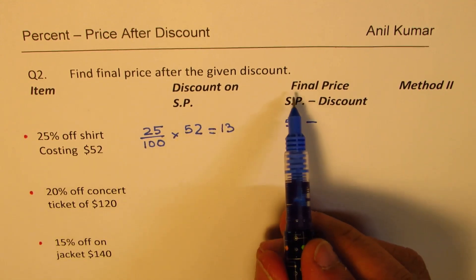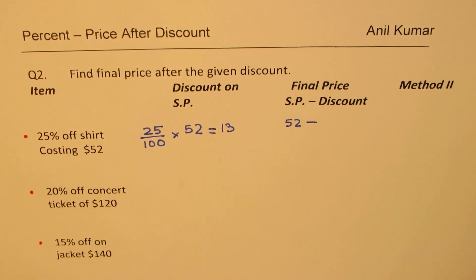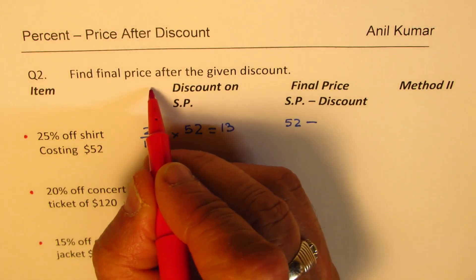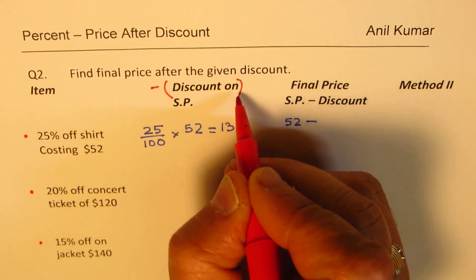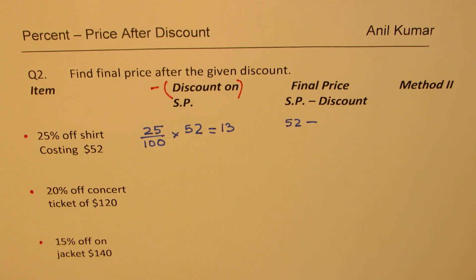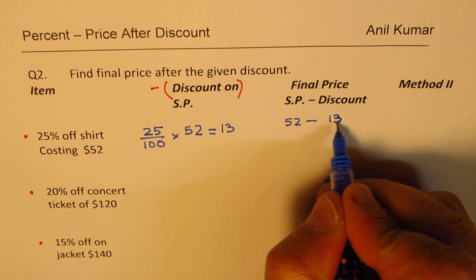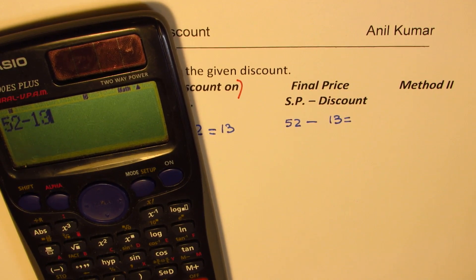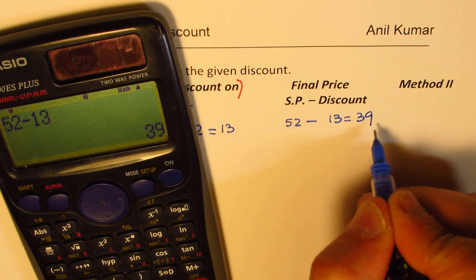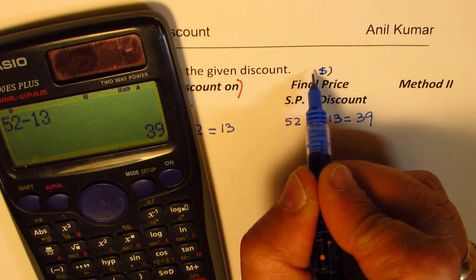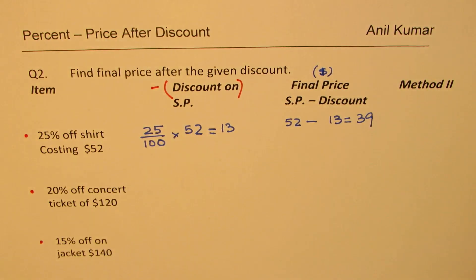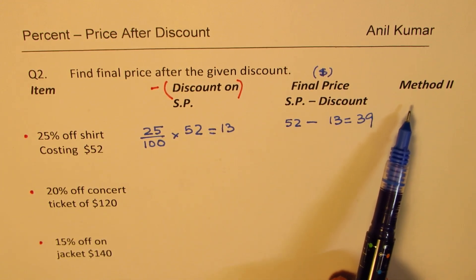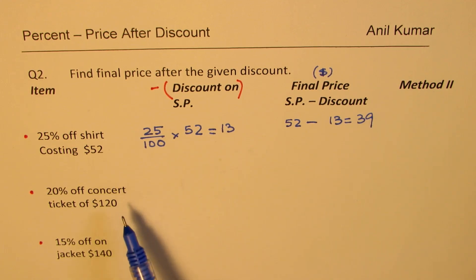Now, to find the final price, this is the discount. So, we have to always take away discount. Discount is something which you should take away. So, we put it in brackets, means minus it. So, you minus this discount of $13 from 52. And then you get your final price. So, we go 52 minus 13 equals to 39. This price will be in dollars. So, that is definitely one way of doing it. We'll talk about shortcut also, which will be our method two, which we'll discuss after solving all of them.